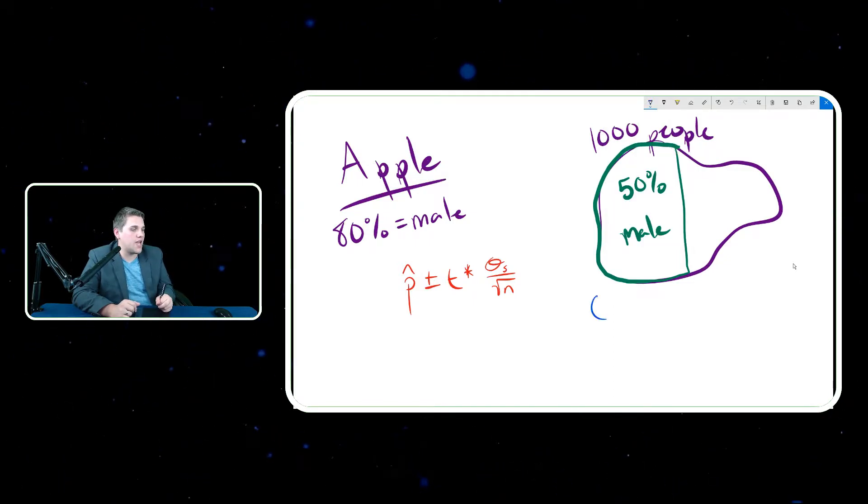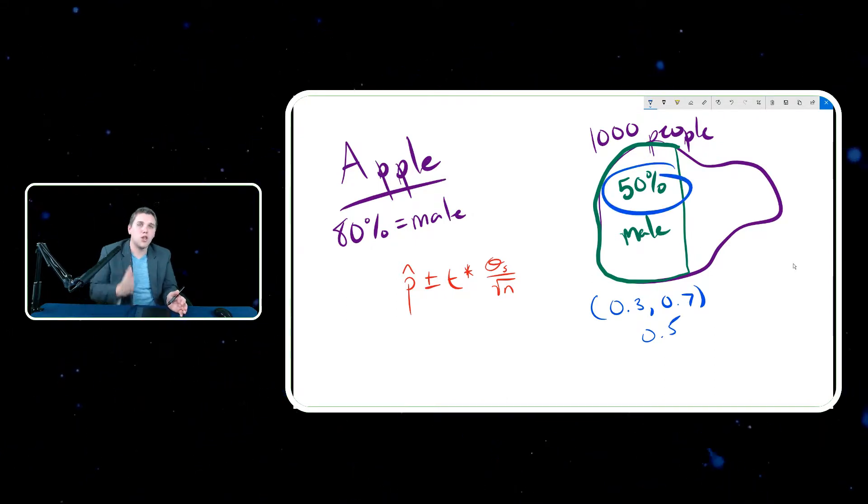Now first off, you should notice that what's the number in between those two numbers? That number is 0.5 or 50%, and that's not by accident. The middle of the confidence interval should always be the statistic that you gathered. This number is literally the middle of your confidence interval, and this number represents your margin of error.